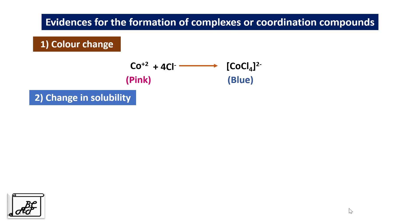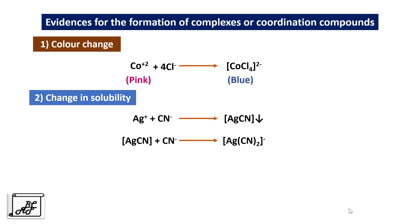The second evidence is change in solubility. Here I will take the example of silver. Suppose cyanide solution is added to silver — it will form a precipitate of AgCN. We can see the solubility has changed and a soluble compound has been changed into a precipitate. If we continue the addition of cyanide into the same solution, it will dissolve the precipitate due to the formation of the dicyanoargentate complex. For both cases, there is a change in solubility, indicating the formation of coordination compounds.